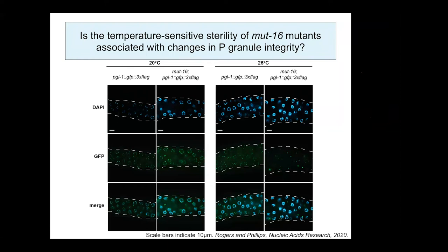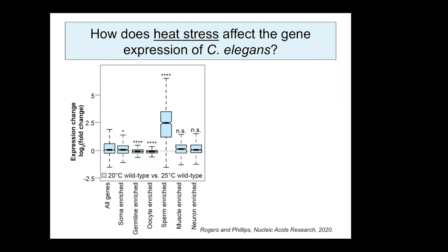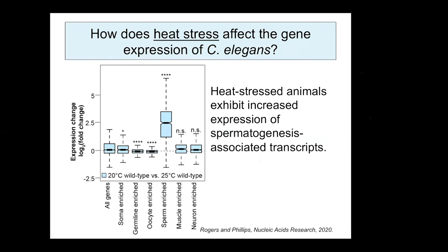To identify what triggers sterility, we sought to identify mRNA expression changes during heat stress that may contribute to reproductive changes in temperature-sensitive small RNA pathway mutants. We generated mRNA-seq libraries from synchronized adult wild-type and MUT-16 mutants cultured at 20 and 25 degrees for a single generation. Comparing wild-type animals at 20 versus 25 degrees revealed that spermatogenesis-enriched genes are significantly upregulated in wild-type animals during heat stress, and we observed the same in MUT-16 mutants at 25 degrees, suggesting increased expression of spermatogenesis-associated transcripts is a common result of heat stress.